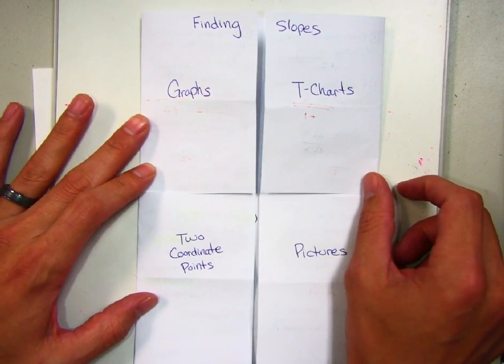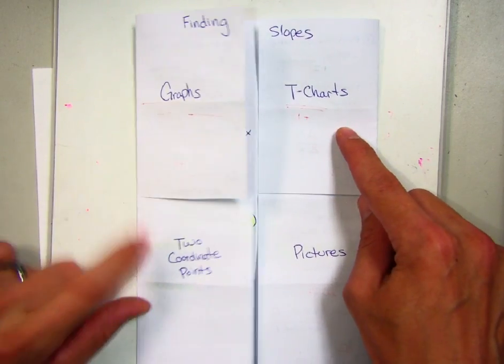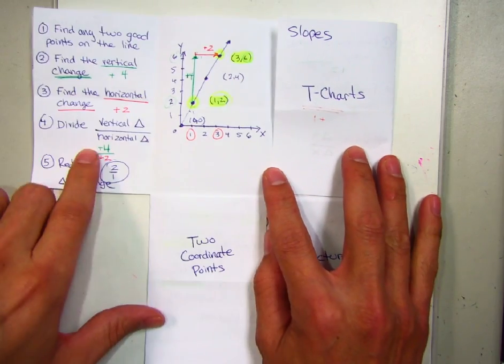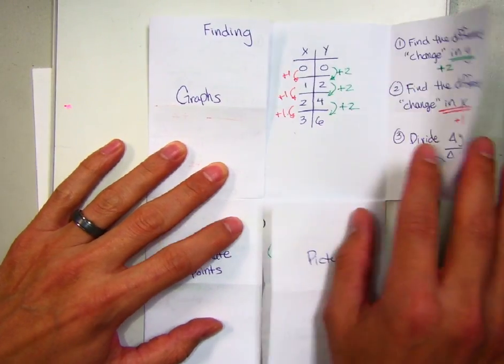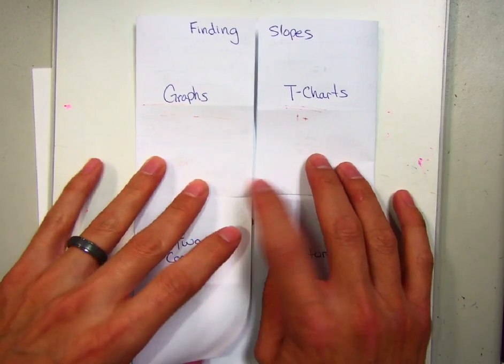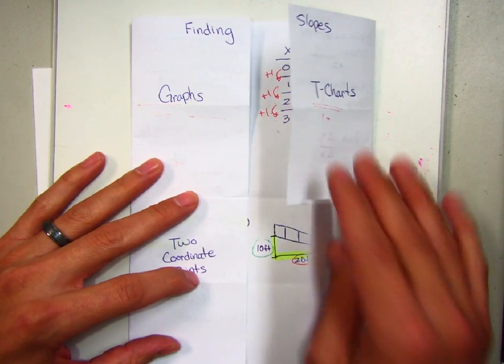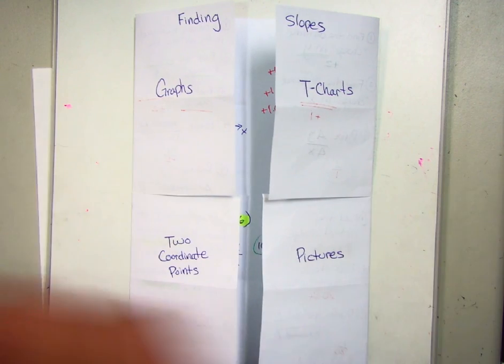I'm going to make a video today on how to make this foldable on finding slopes through graphs, t-charts, two-coordinate points, or through pictures. In the end you'll be able to open up graphs and look through your list of things to do to find the slope, or for t-charts, or for two-coordinate points, or if you're given a picture. This video is all about how to make this foldable.